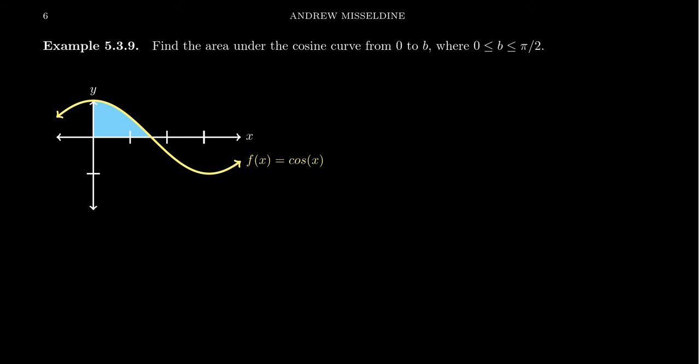And so let's look at one more example of this. This time, let's use a trigonometric function, cosine. Find the area under the cosine curve from 0 to b.